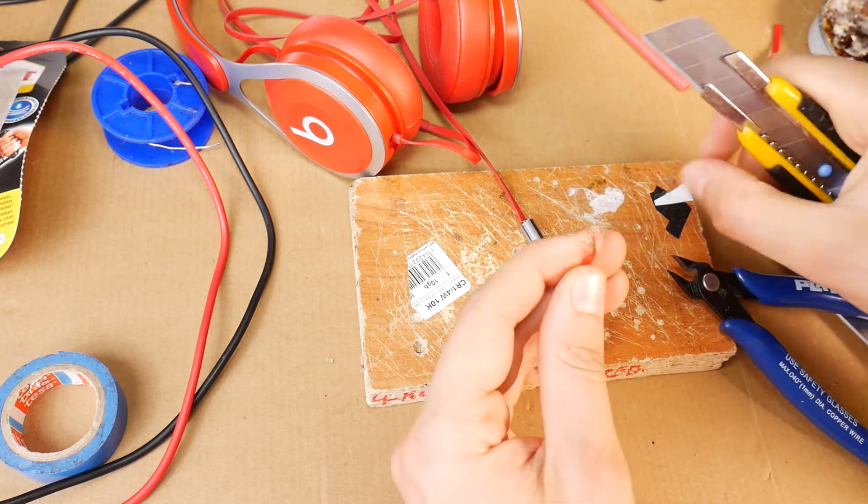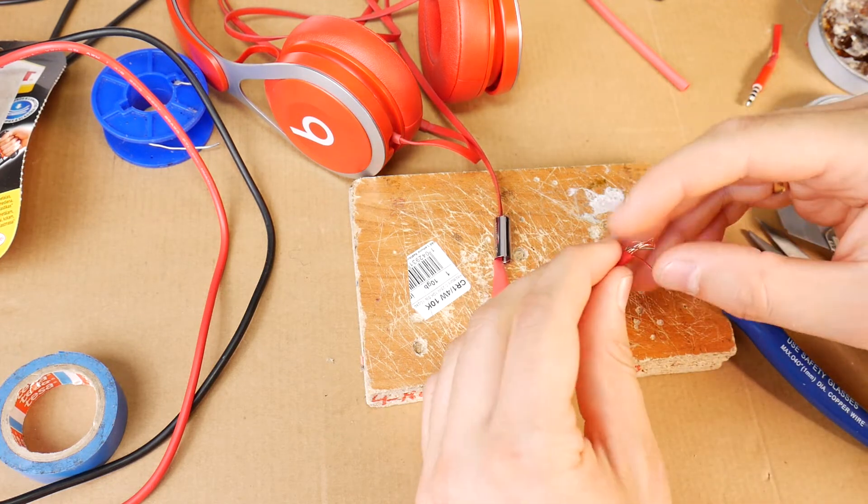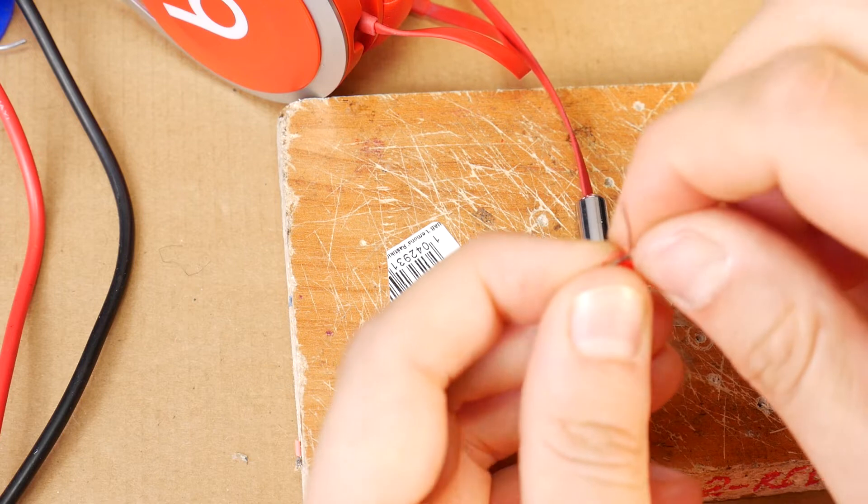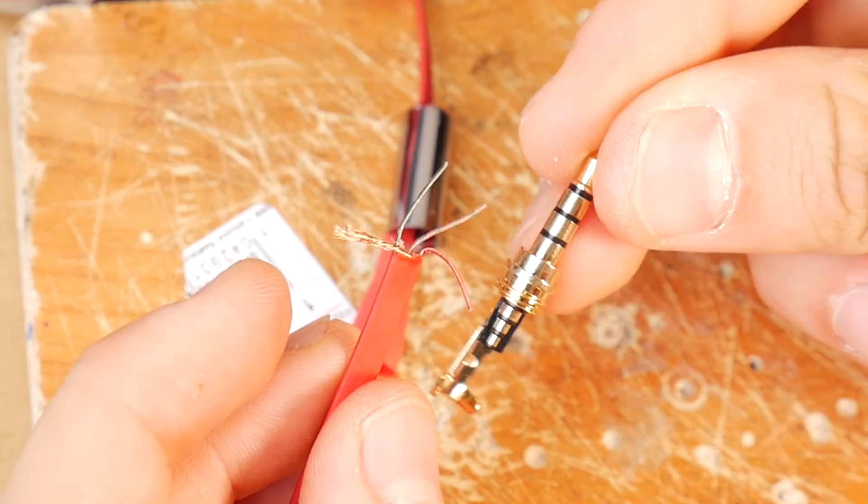Separate all the inner wires by color. Cut off the fabric thread so as not to interfere with the repair process. Gold wires need braiding together. They will be for mic and speaker ground. It should look like this: four wires.